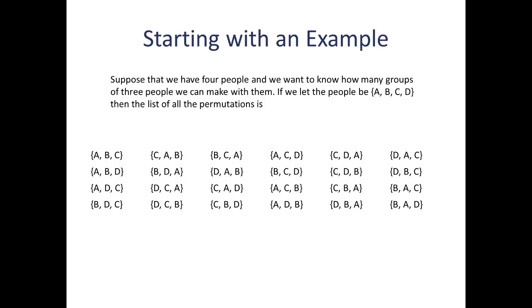I'm going to start with a specific example. Suppose that we have four people, and we want to know how many groups or combinations of three people we can make. Well, if we let the people be A, B, C, and D, you can think of that as Adam, Bruce, Charles, and Diane, if you like. It's just easier if we write out just the first initials of their name. Then the list of all the permutations is what you see on this slide.